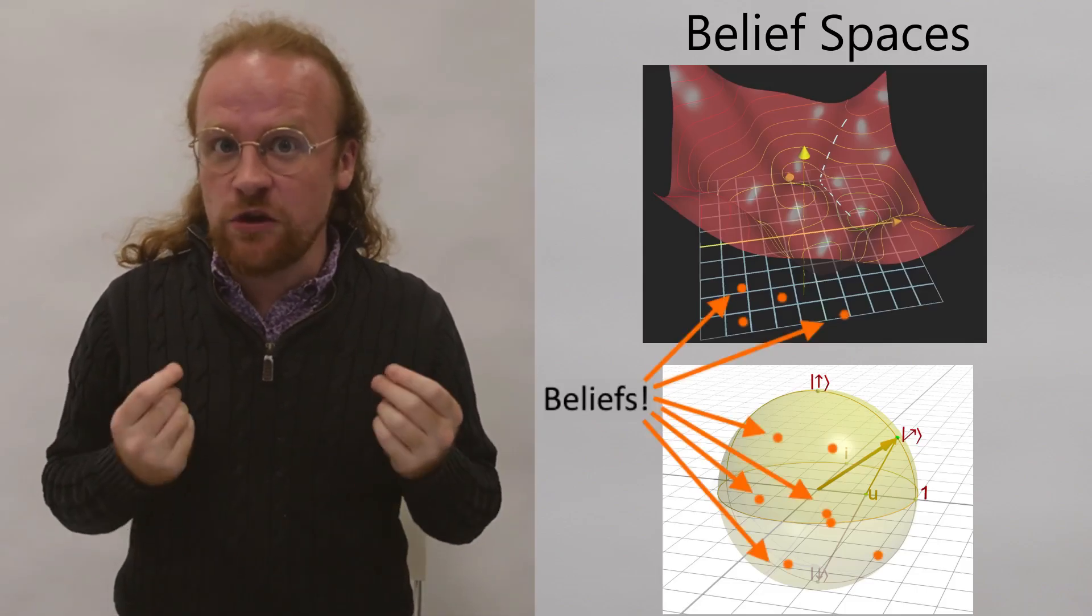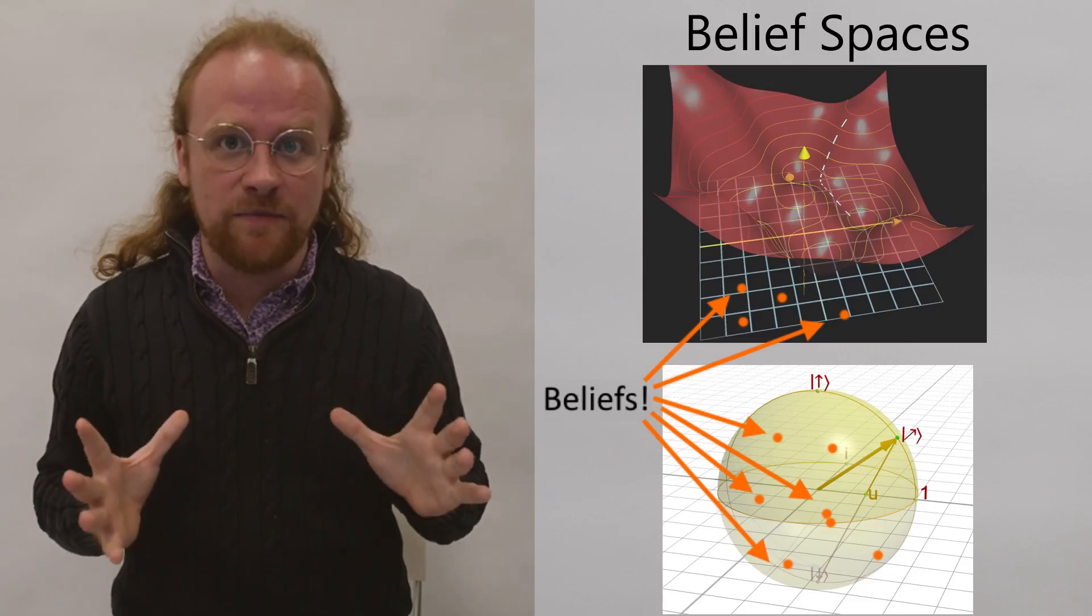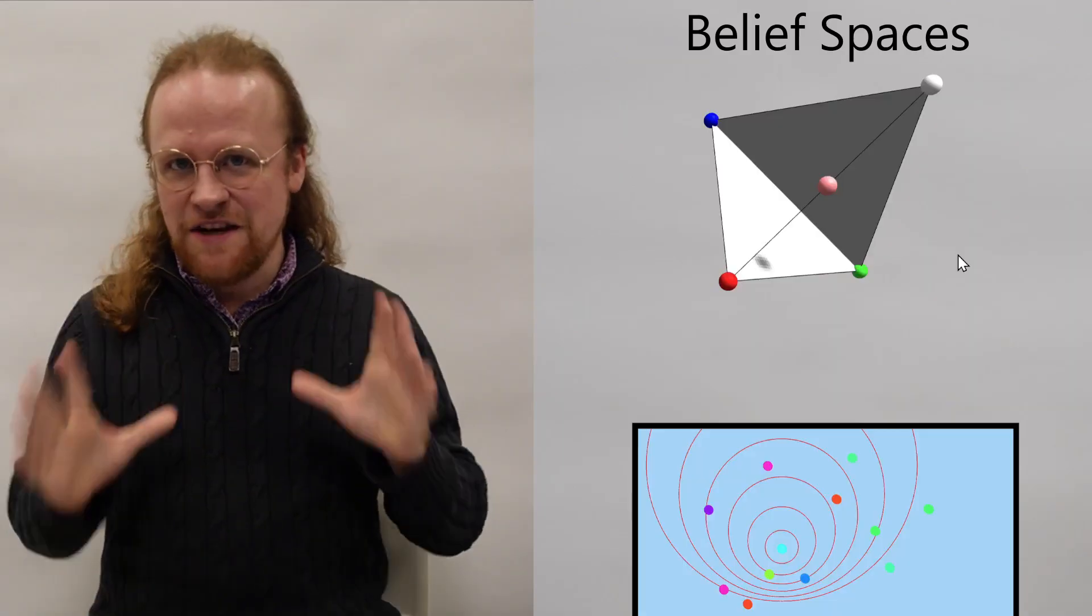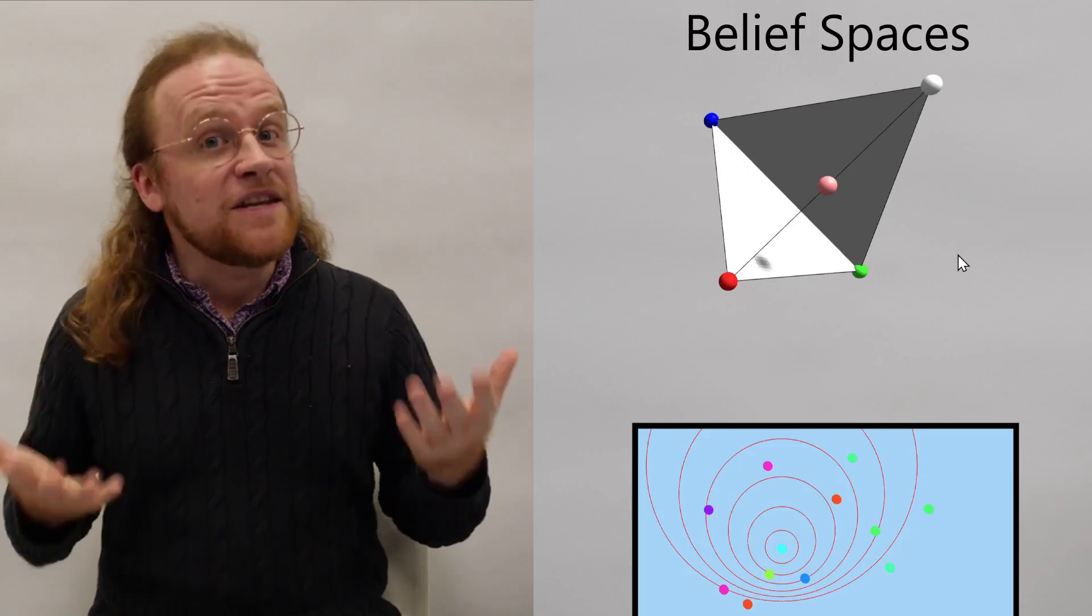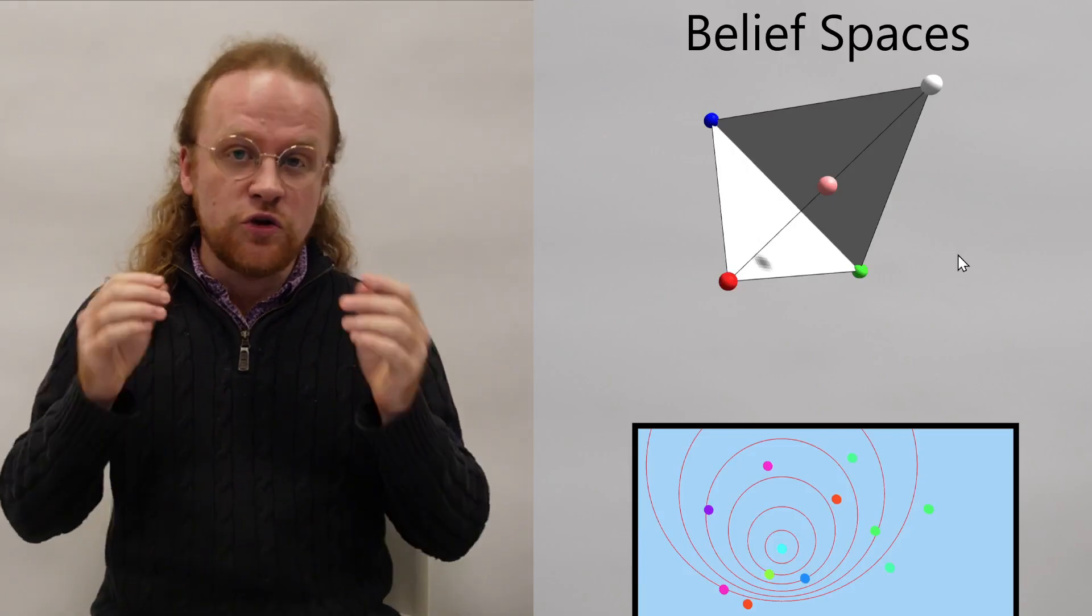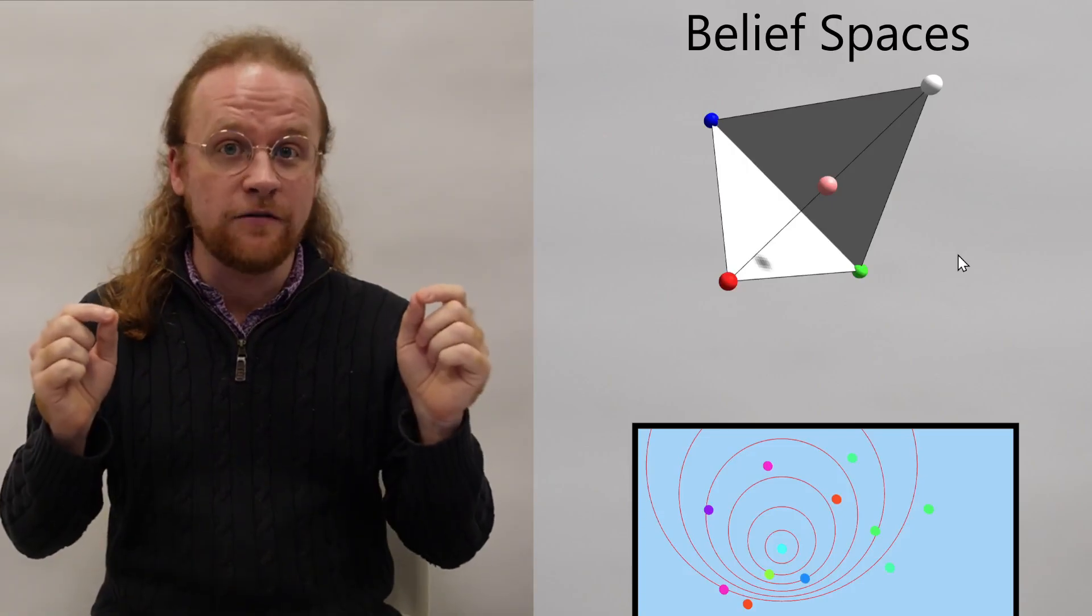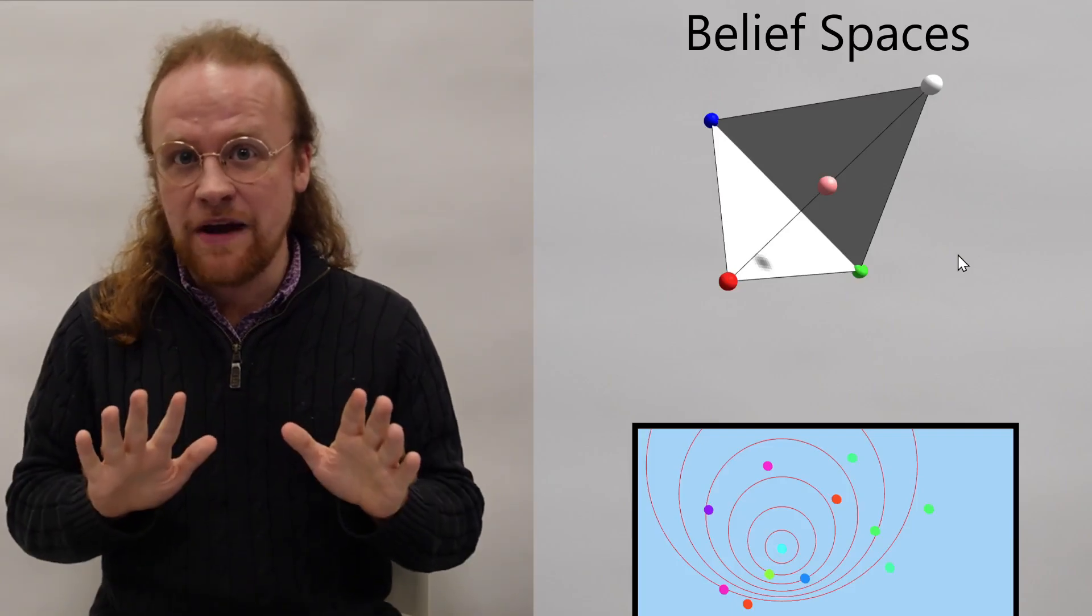There are lots of different belief spaces out there and we implicitly have them in mind if we ever say that two beliefs are close or far away from each other. To be more rigorous about that, if we hold belief A and we see evidence supporting belief B, the further apart they are, the more surprised we will be.